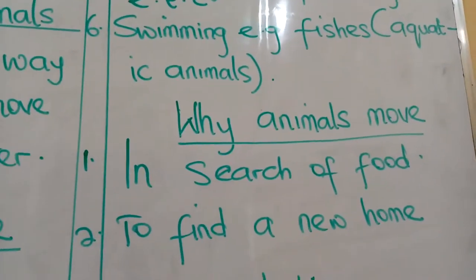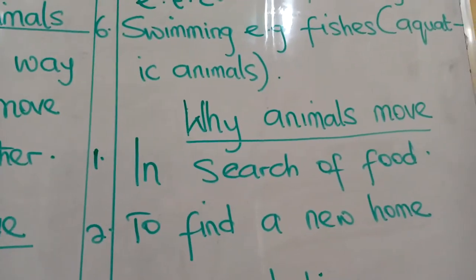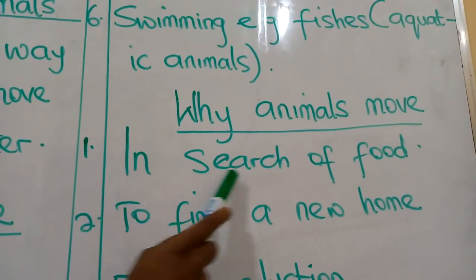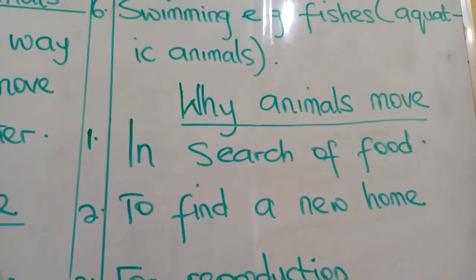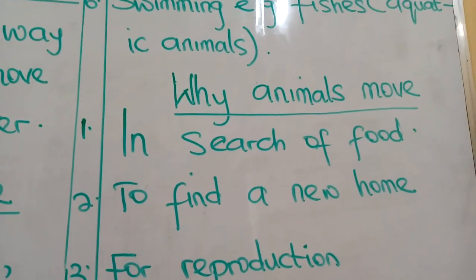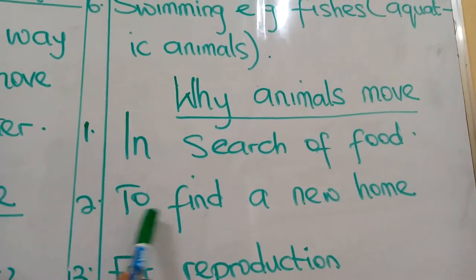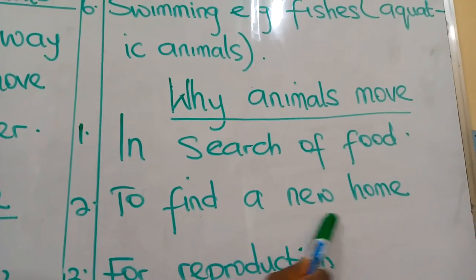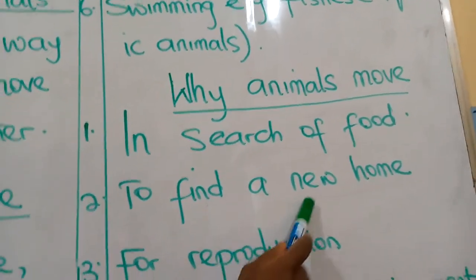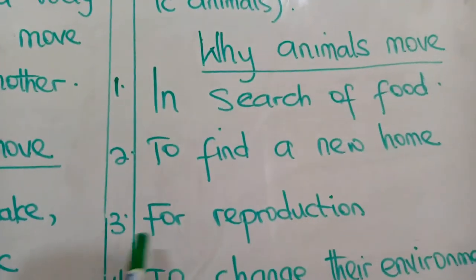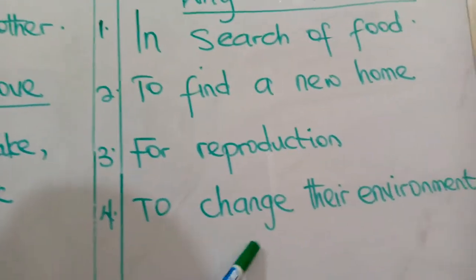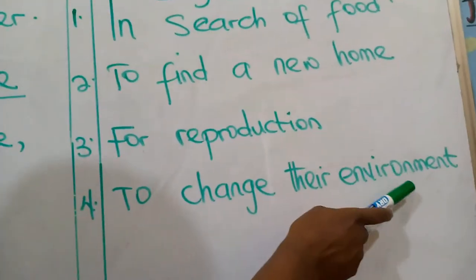Why do animals move from one place to another? Number one: in search of food — food is very important not only to you and I but also to other animals. Number two: to find a new home. Number three: for reproduction. Number four: to change their environment.